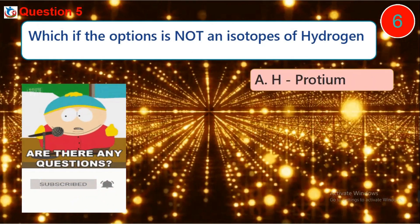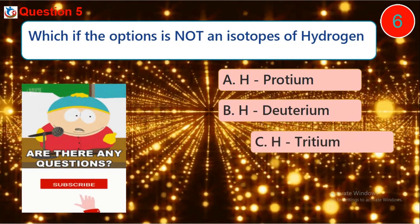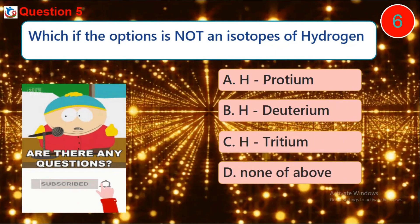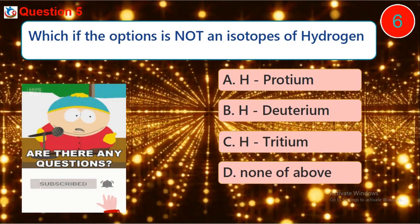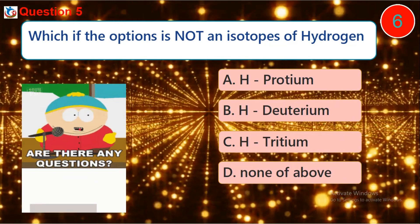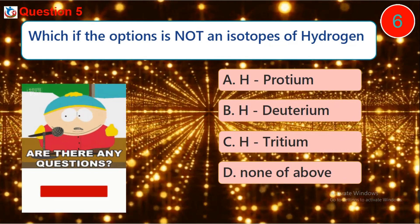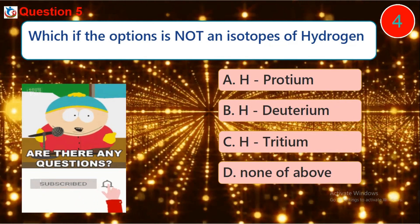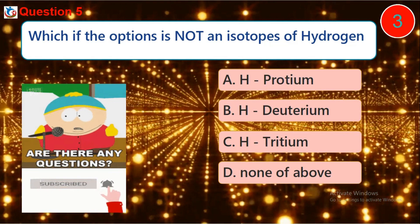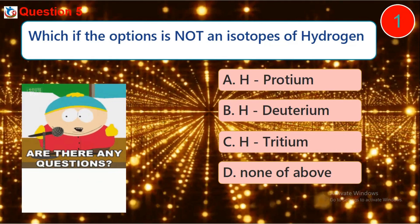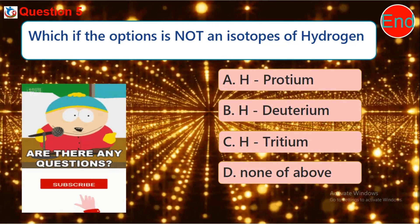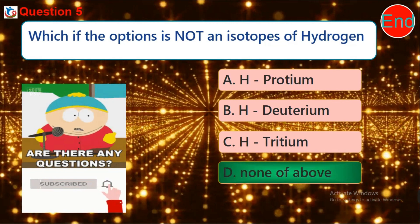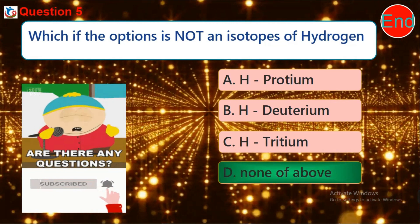Question five: which of the options is not an isotope of hydrogen? A. protium, B. deuterium, C. tritium, D. none of the above.